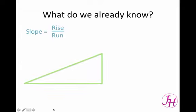So what do we already know? We know that slope is rise over run. So if you have two points, here's your first point, and you want to get to the second point, you're going to look at the rise, which is the difference of the y values, how high up it's going vertically, over the run, how far horizontally is it going to go?